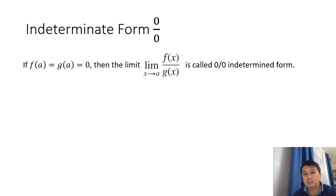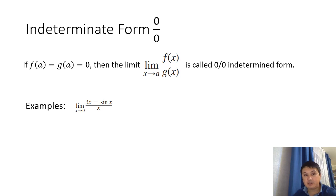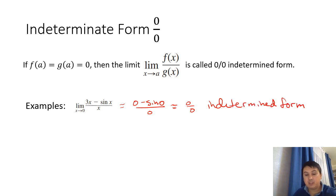Before we proceed, let's give a few examples. We have (3x − sin x)/x. If you let x go to 0, we get 0 − sin(0) divided by 0, which is like 0/0. So this is an indeterminate form. It doesn't mean that the limit is undefined or something — it just means that we encounter the indeterminate form 0/0, so we have to do something.